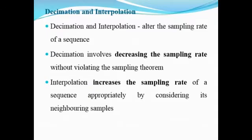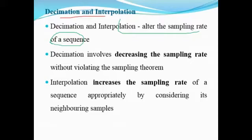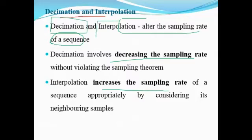Next is the process of decimation and interpolation. Decimation and interpolation involve altering the sampling rate of any given sequence. If we consider a given sequence x of n with some samples, say around 100 samples, we are going to alter the sampling rate either by decreasing or increasing it. Two processes are involved: one is called decimation and the other is called interpolation.